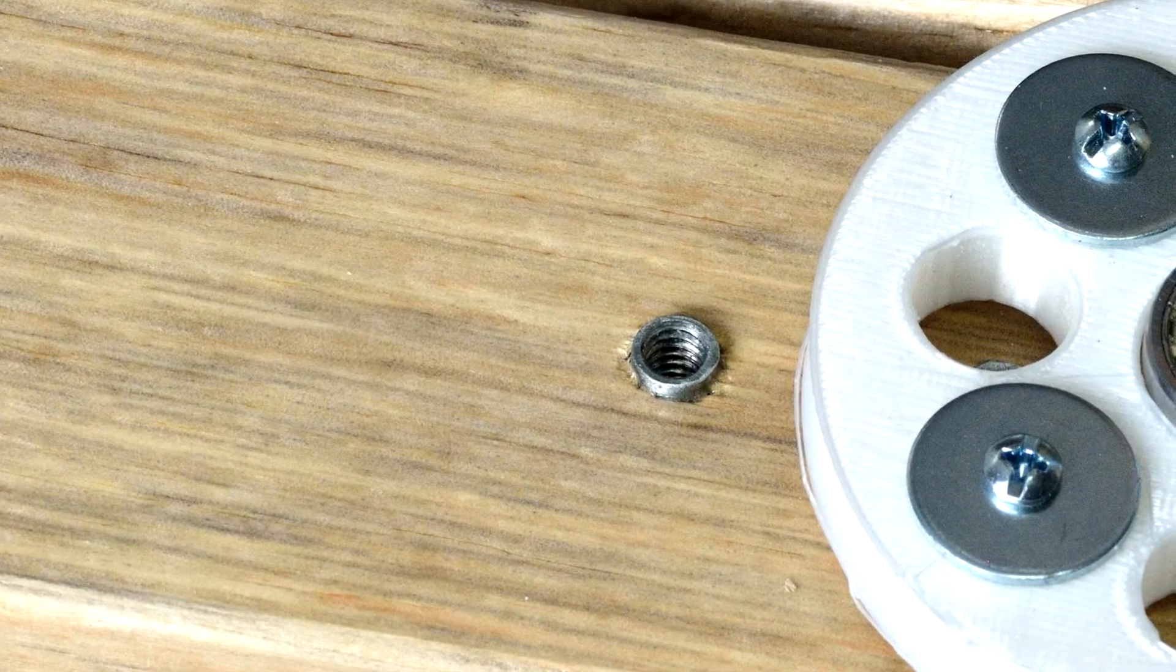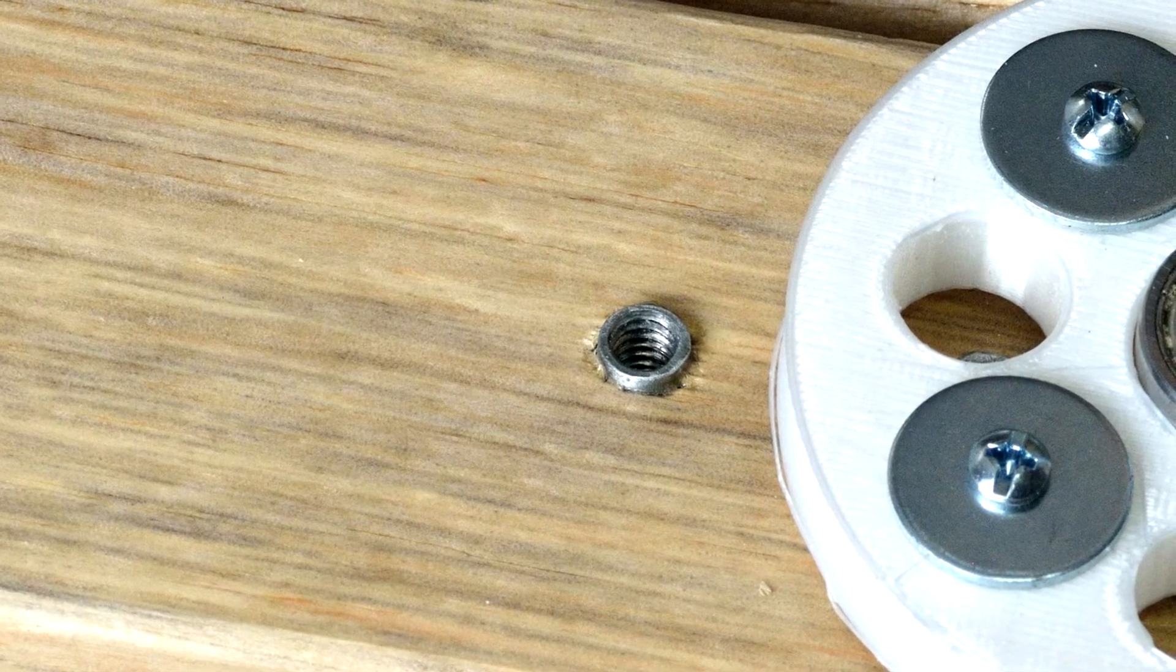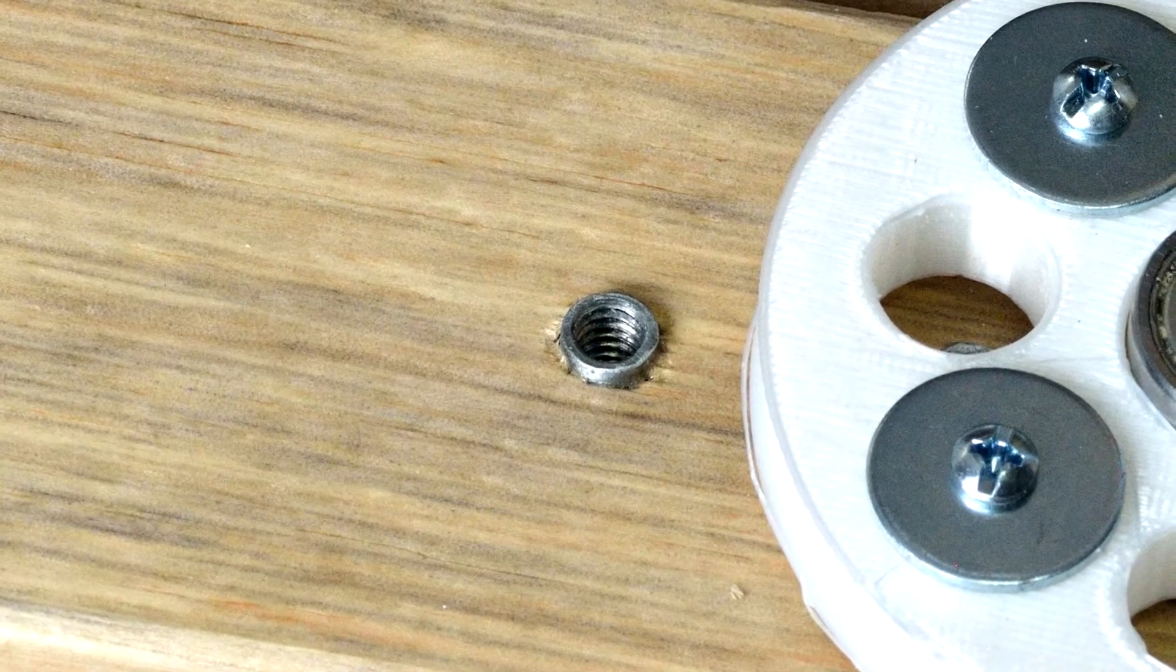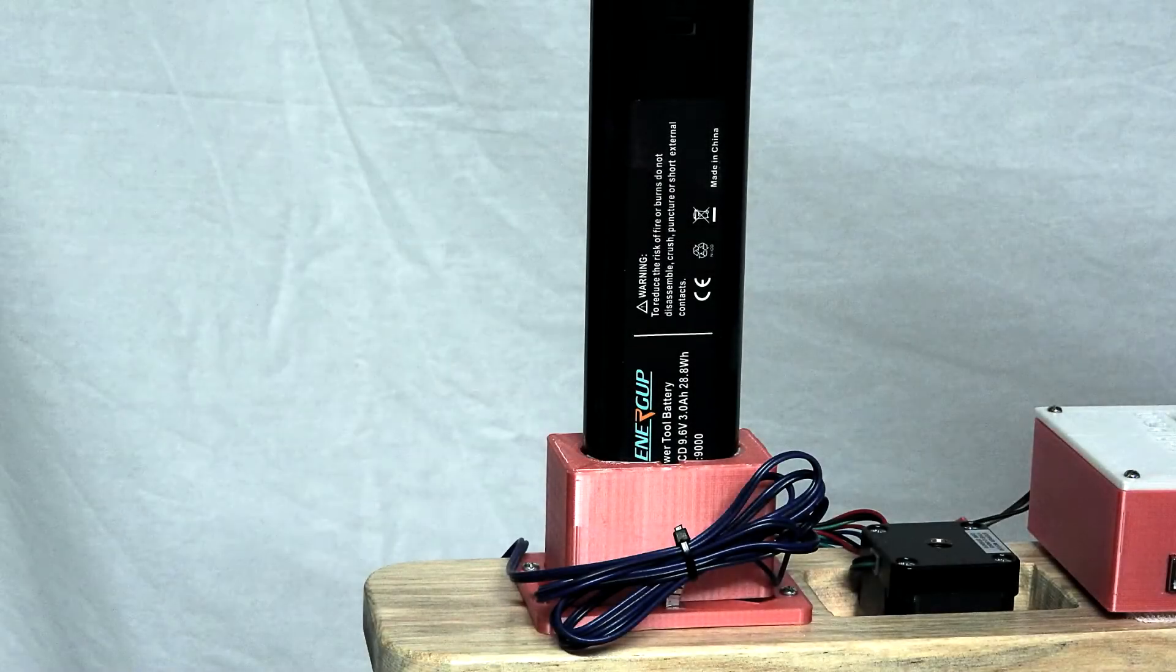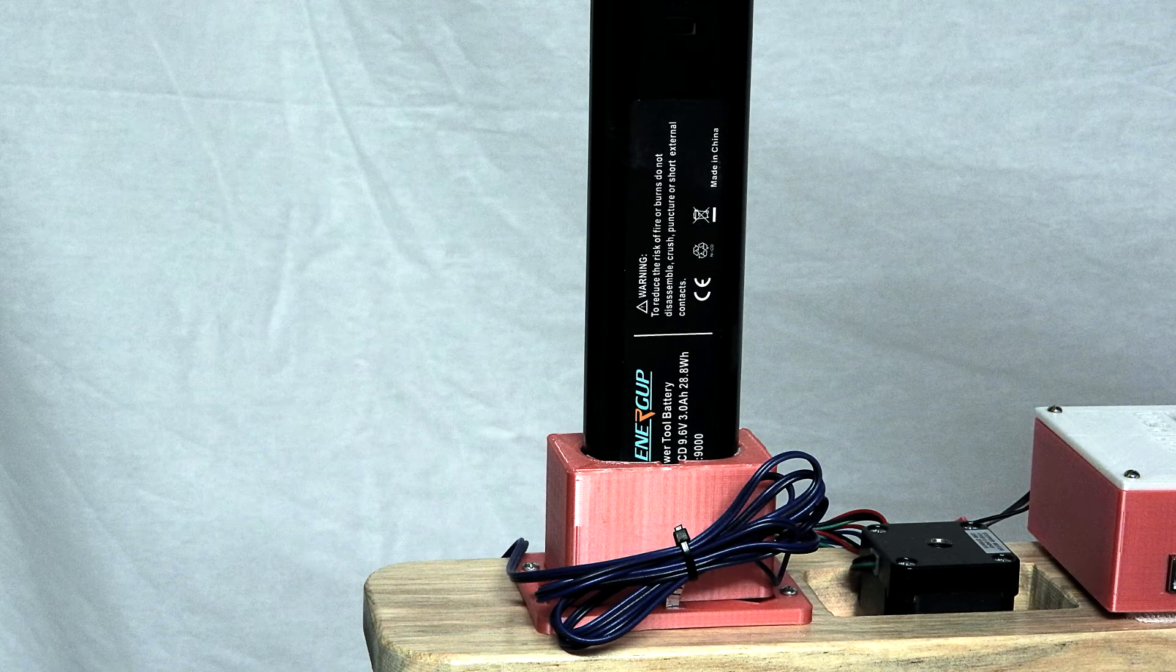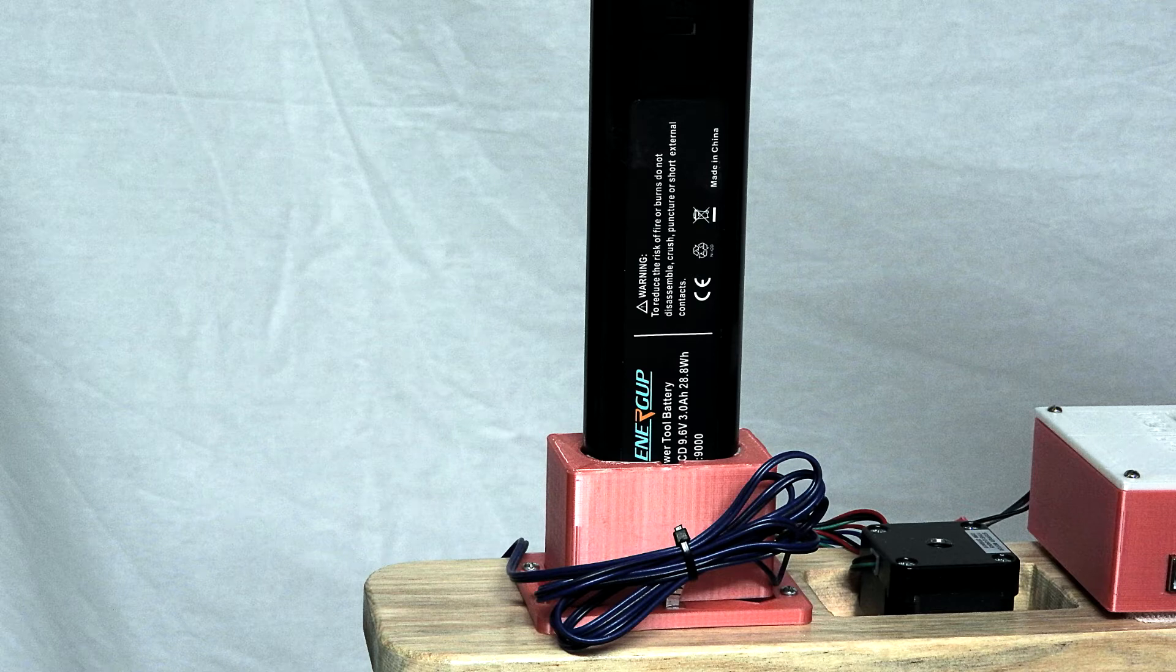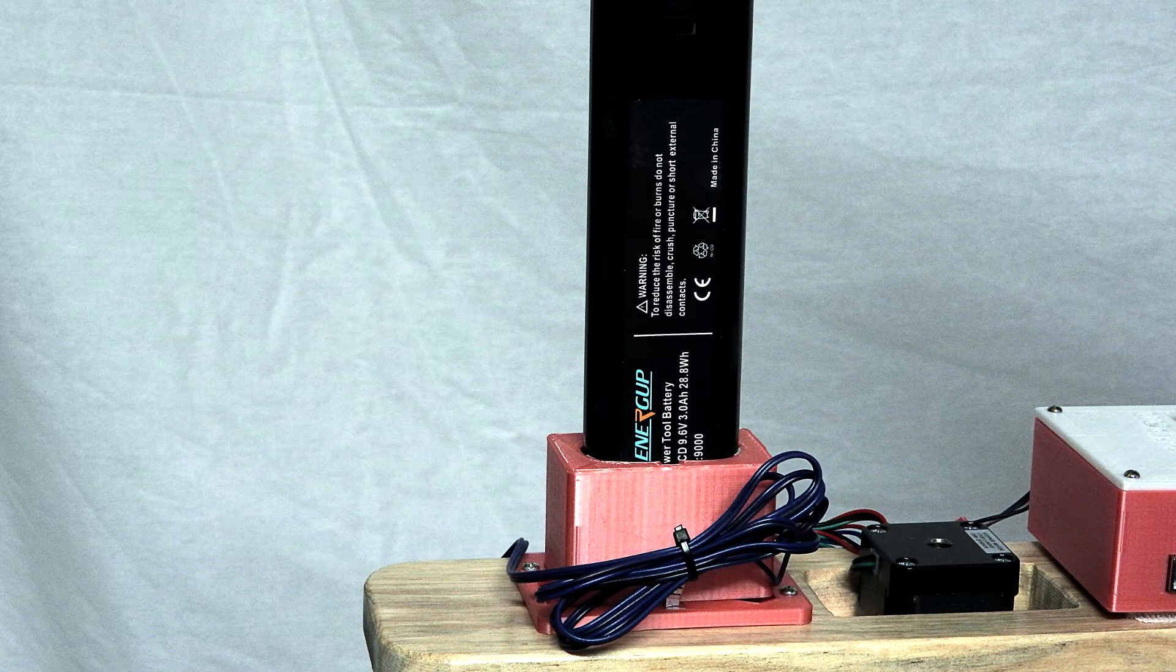As on the previous pano head, I used one quarter inch threaded inserts for mounting the tripod quick release mount to the base. I also printed a battery holder for my 9.6 volt Makita drill battery and mounted it on the horizontal support, eliminating most cable movement during operation.